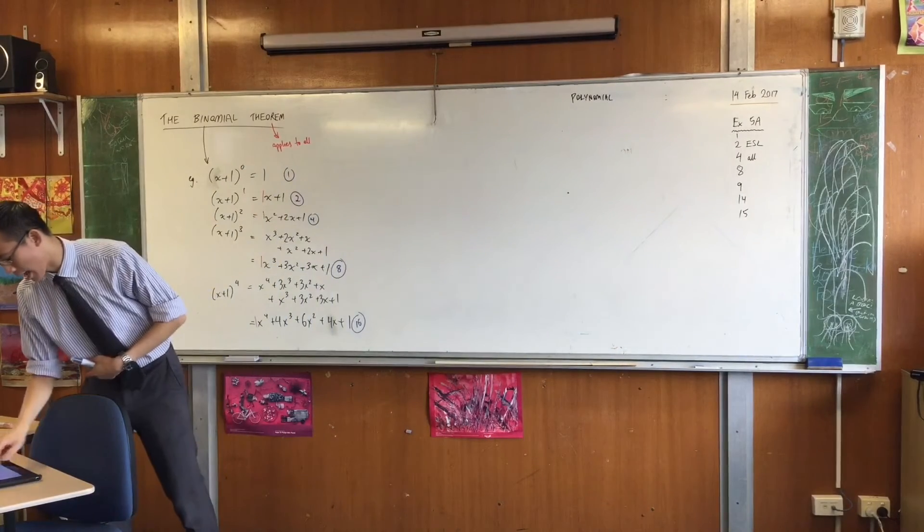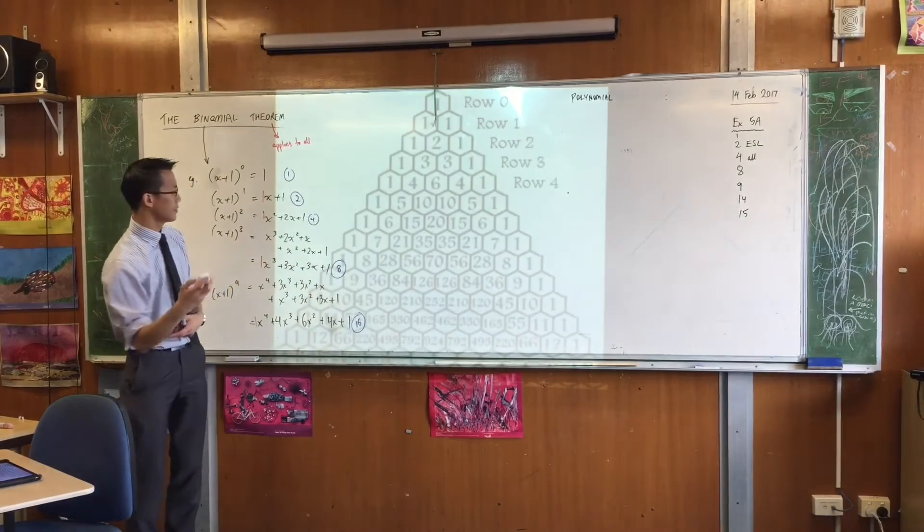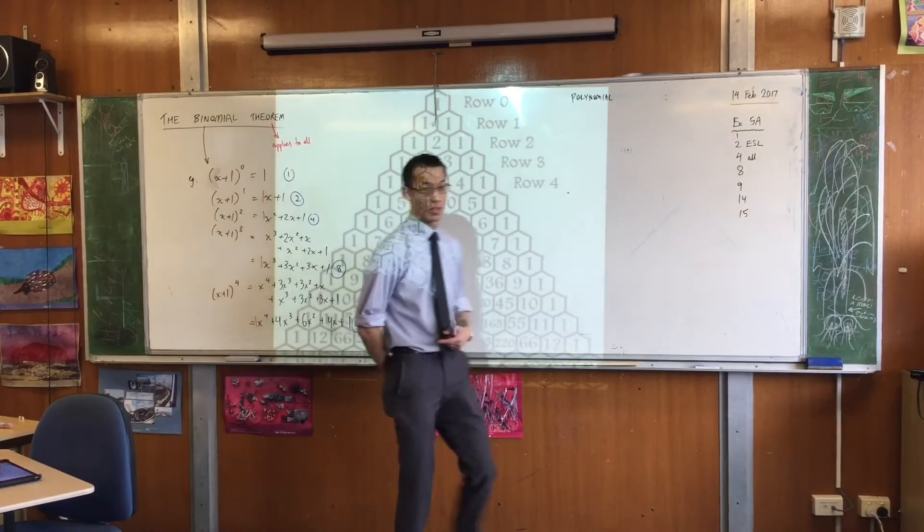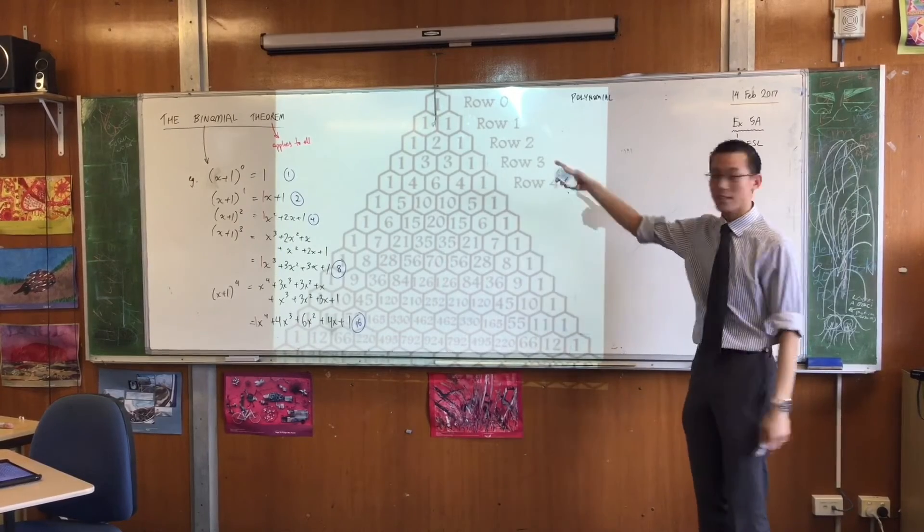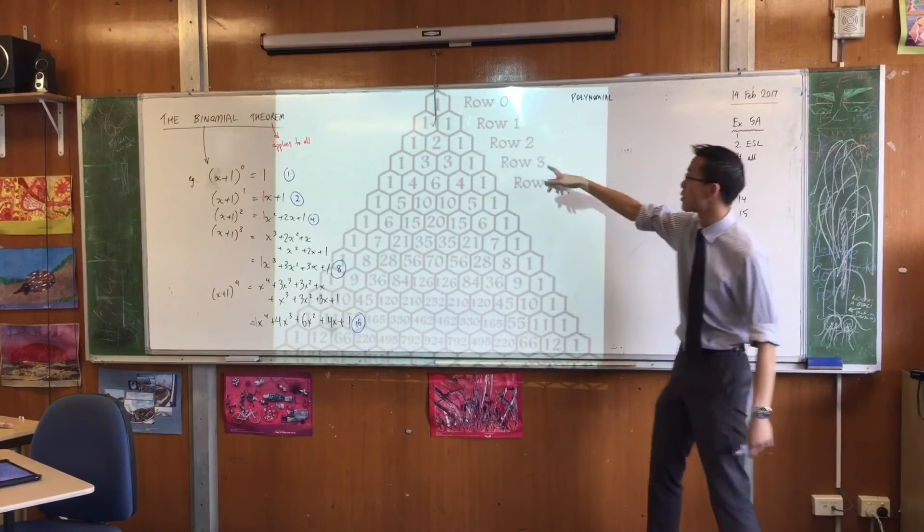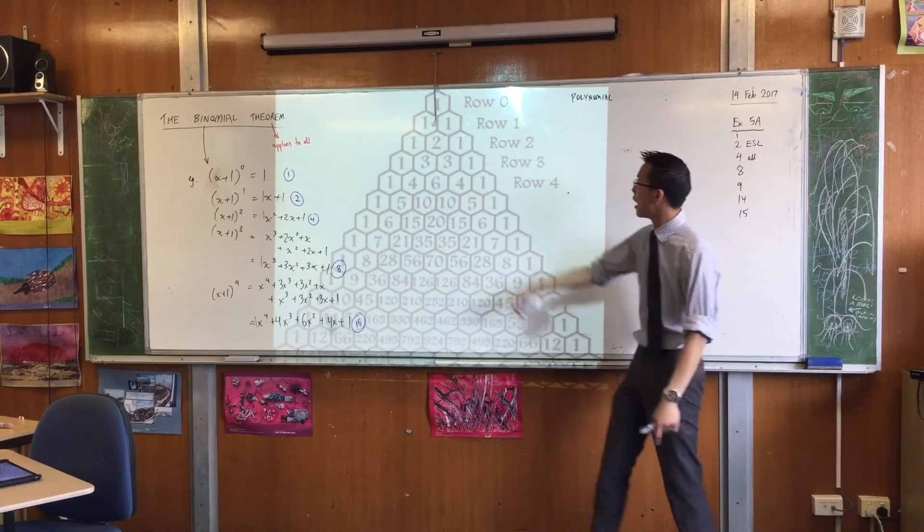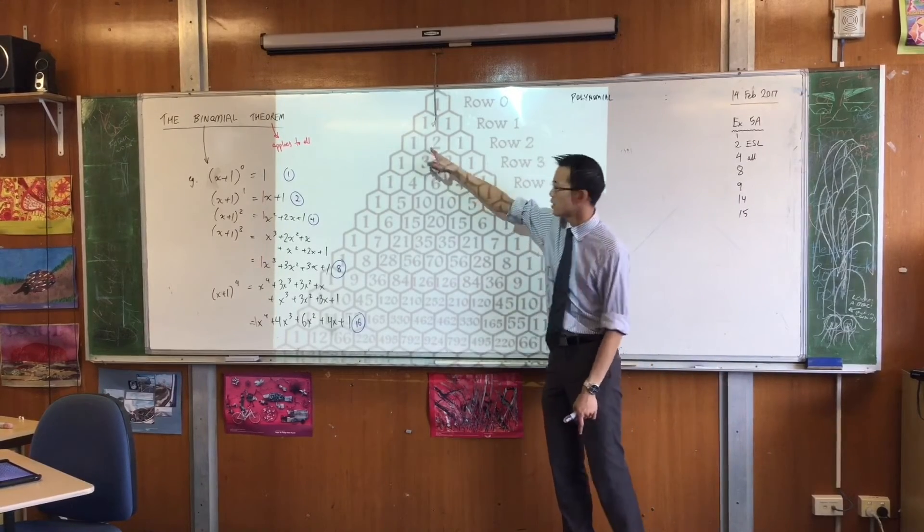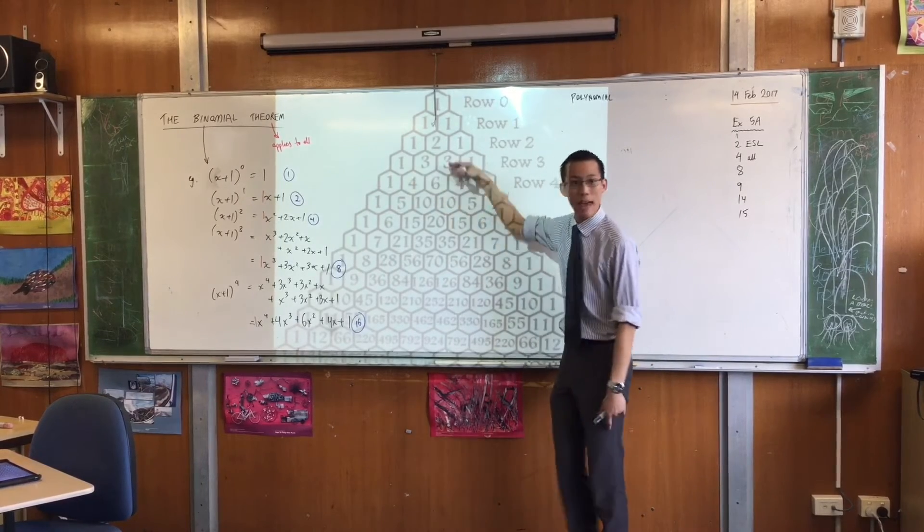Because these coefficients, you may recognize as the numbers that appear in this guy. So, this, of course, is Pascal's triangle. And you can see, up in our top rows there, and yes, there is a row 0, you can see the coefficients that we have just generated. There's the x squared plus 2x plus 1. There's the x cubed plus 3x squared plus 3x plus 1, and so on.